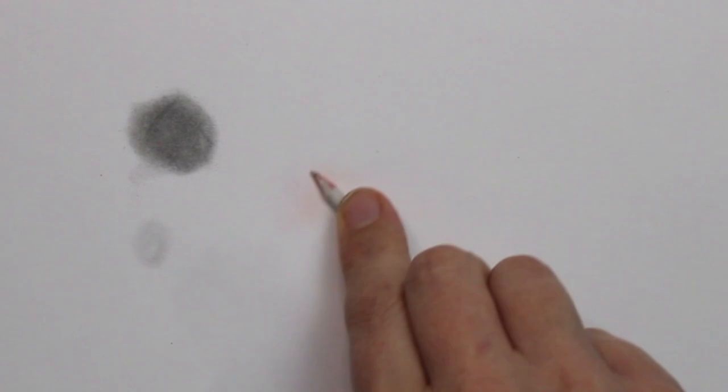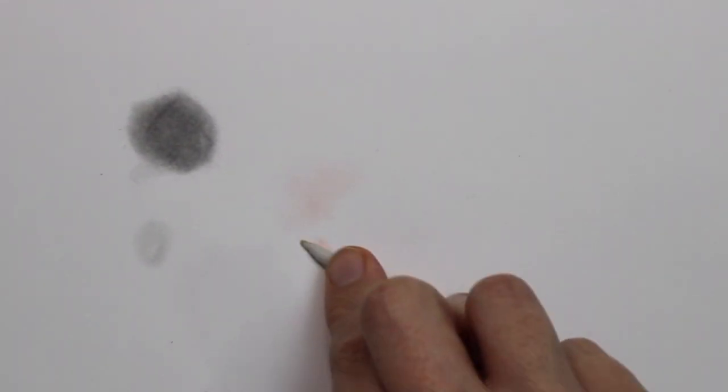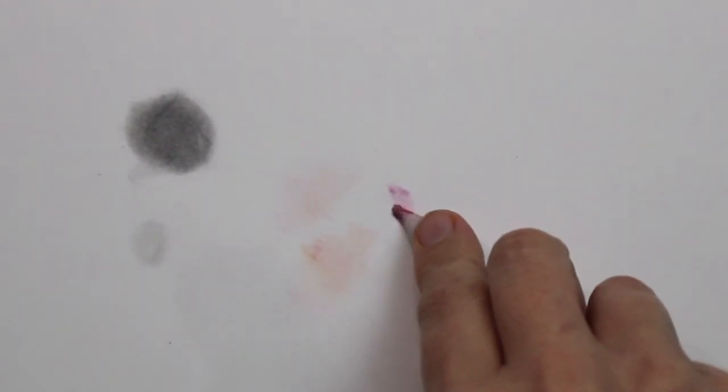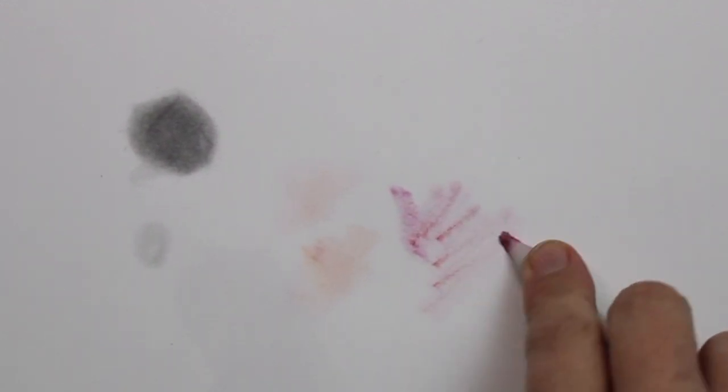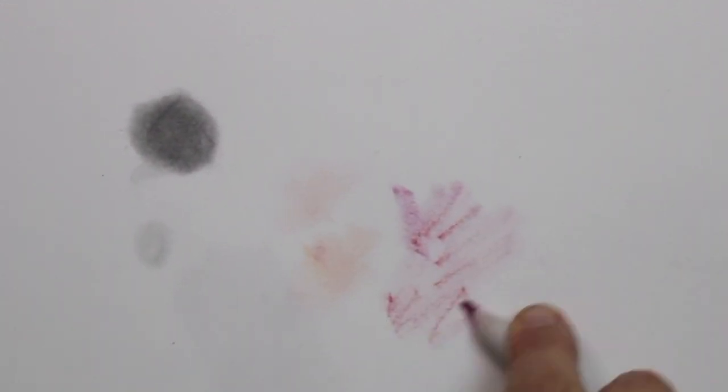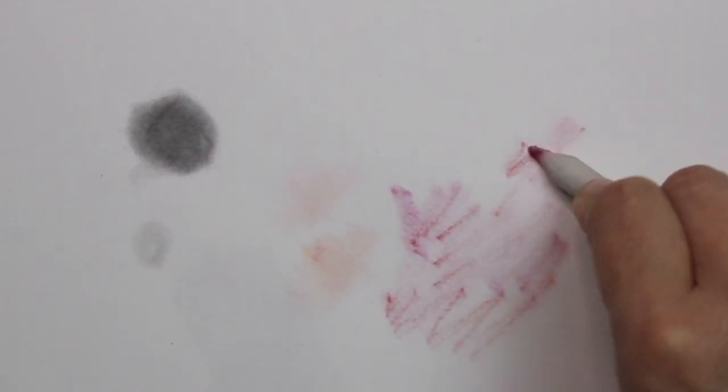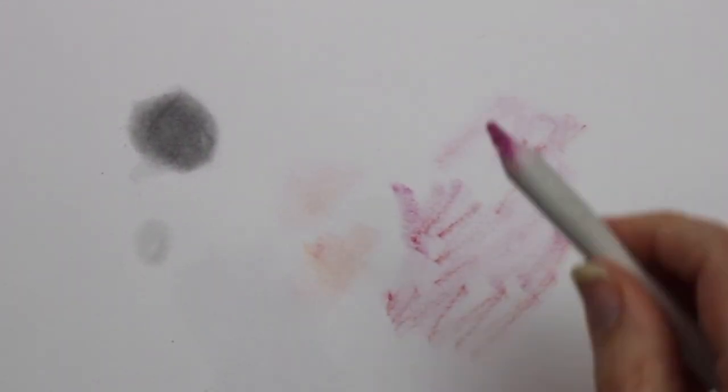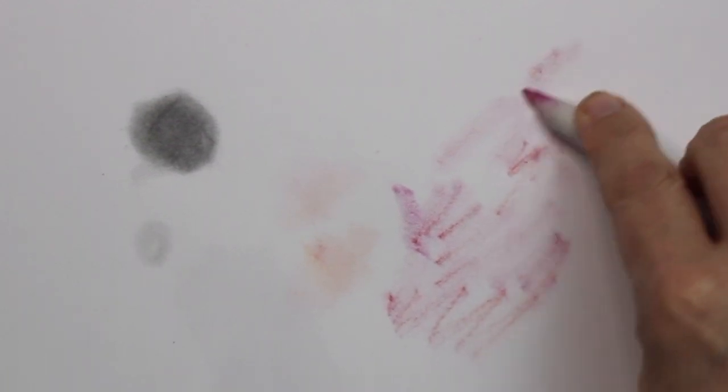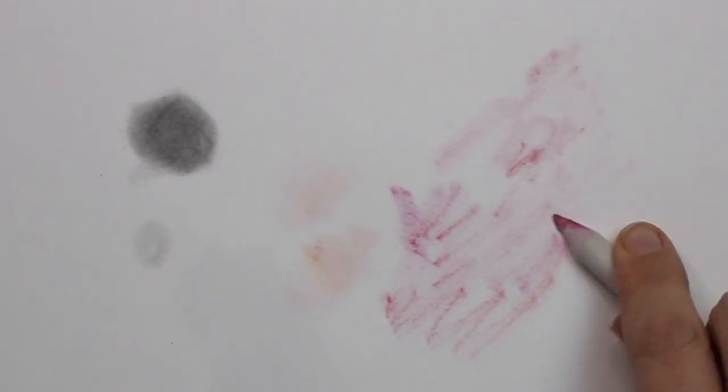I've used this blending stump here to blend some red and orange color pencils, and you can see quite dramatically how the blending stump has held onto that color. So if for example I was blending a sky with blue color pencil, that red would transfer onto the blue of the sky.